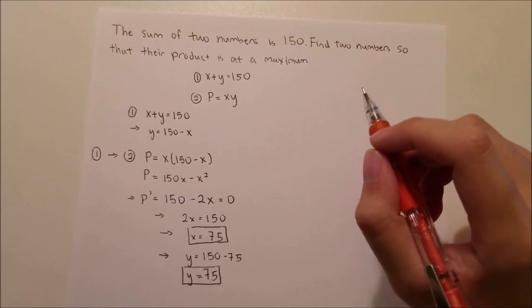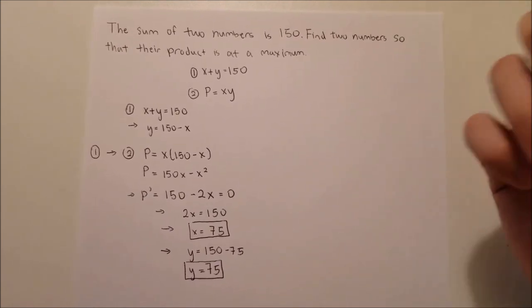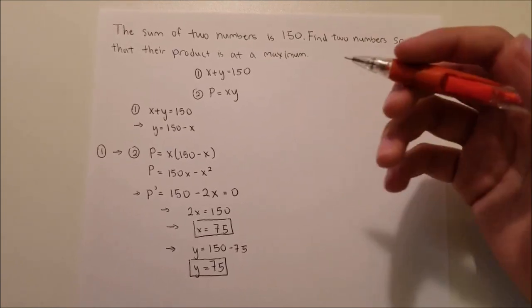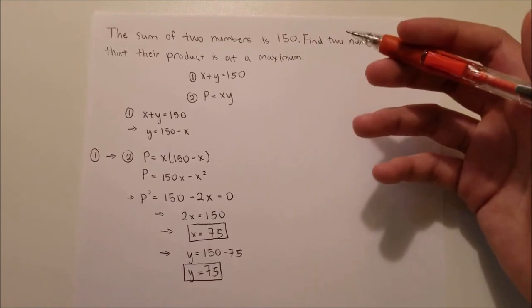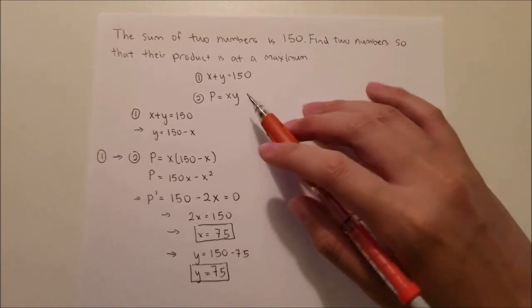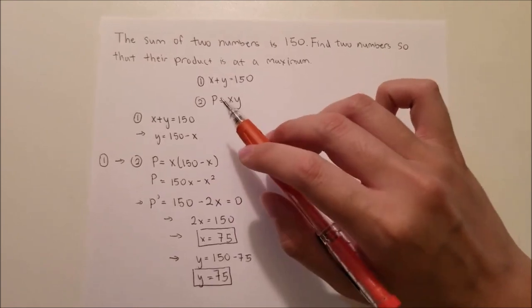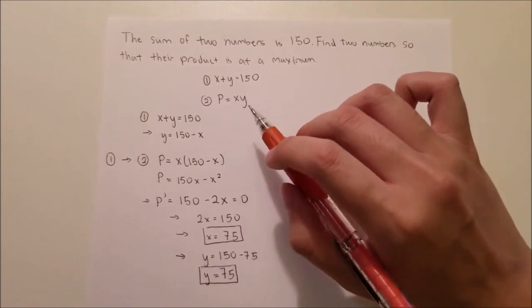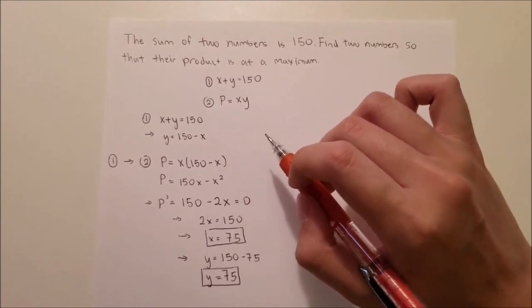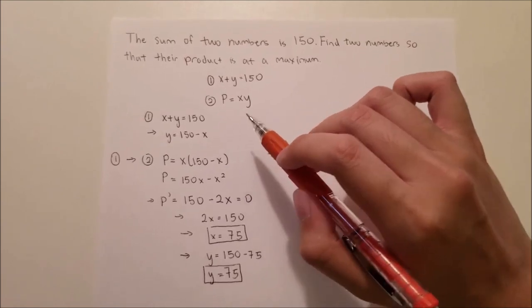In optimization problems, often there are more than one relationship and you have to isolate the variables for the function you want to find the maximum or minimum of until you only have one variable. In this scenario, we have x plus y as the two numbers and their sum is 150. So x plus y equals 150 and the product p equals xy. And we want to optimize p so that it's at its maximum.